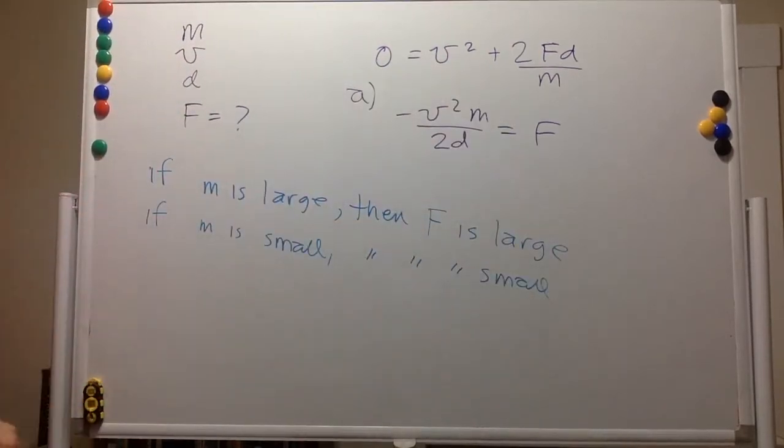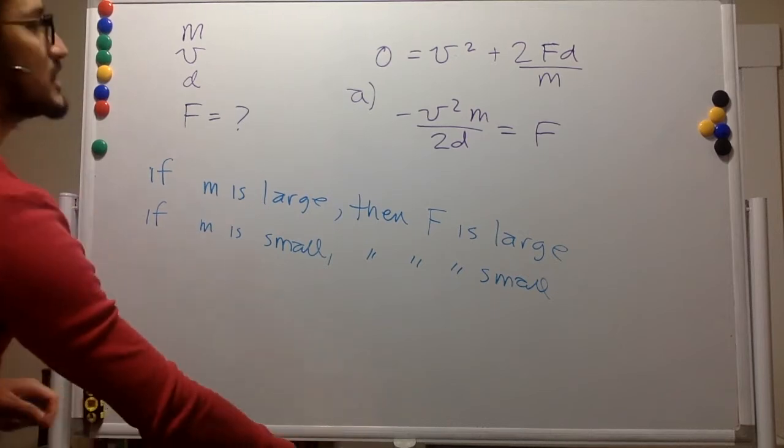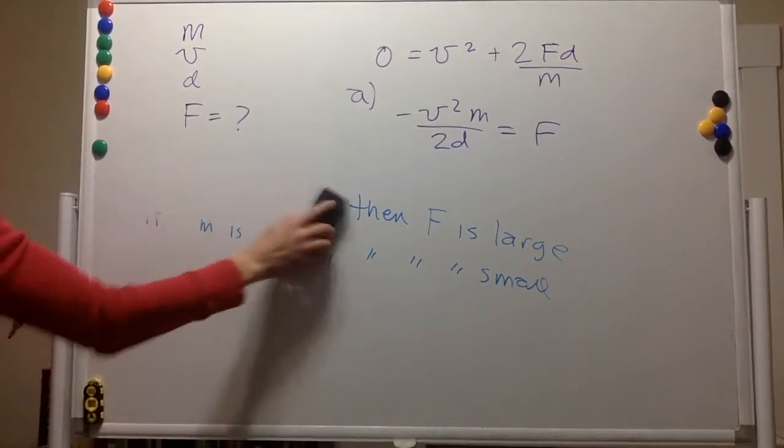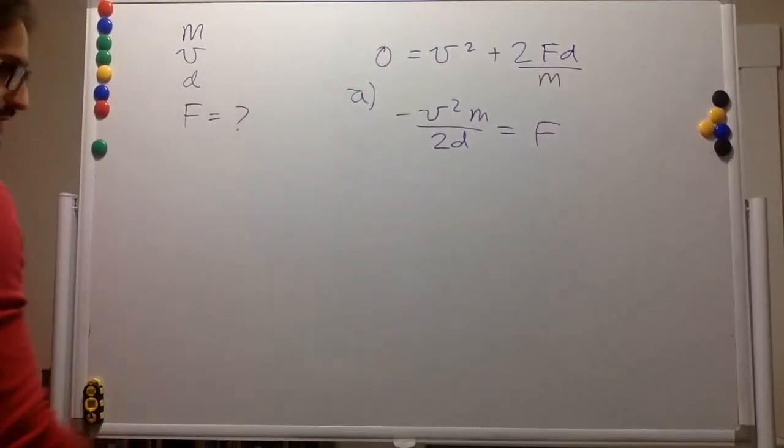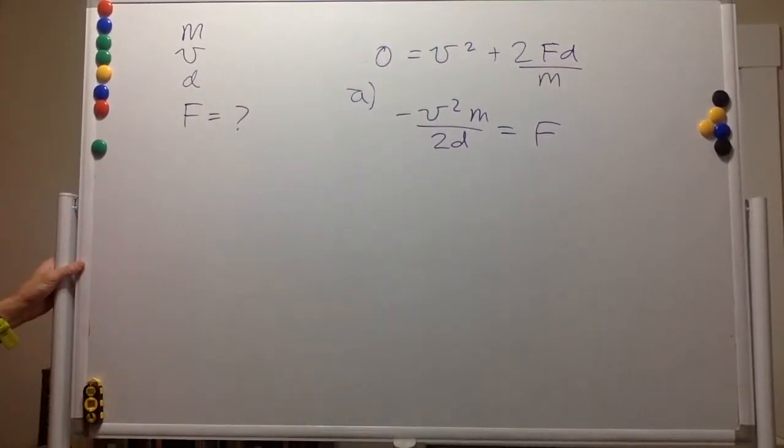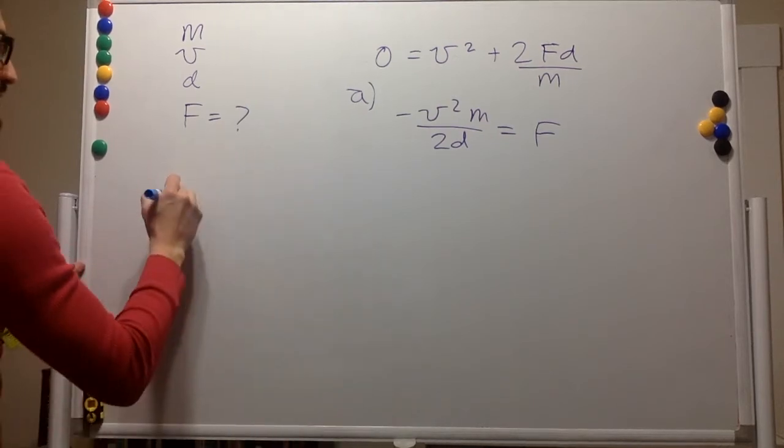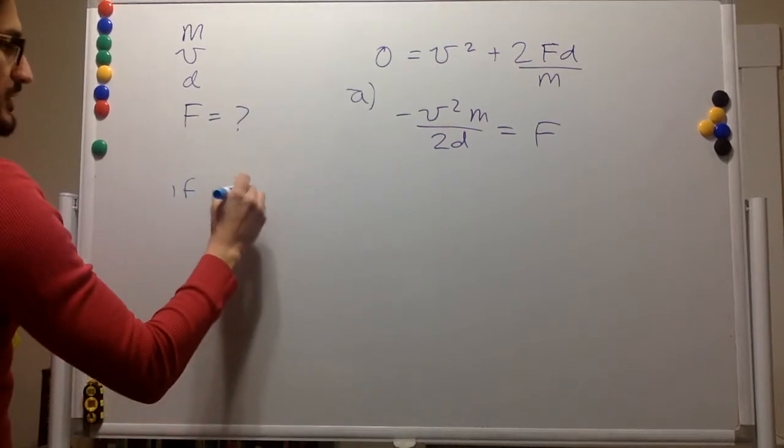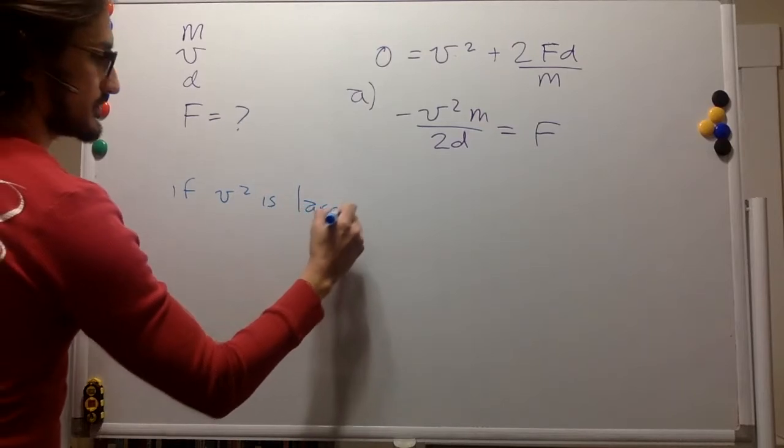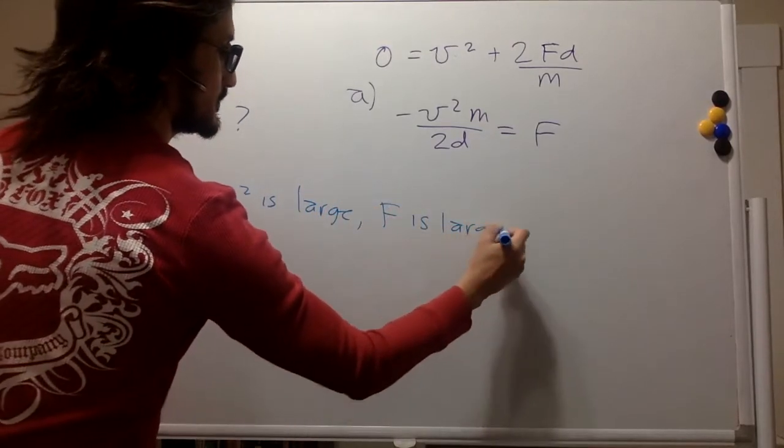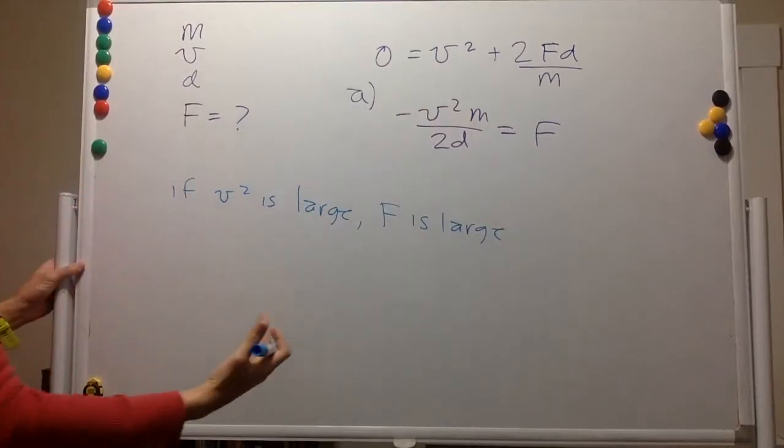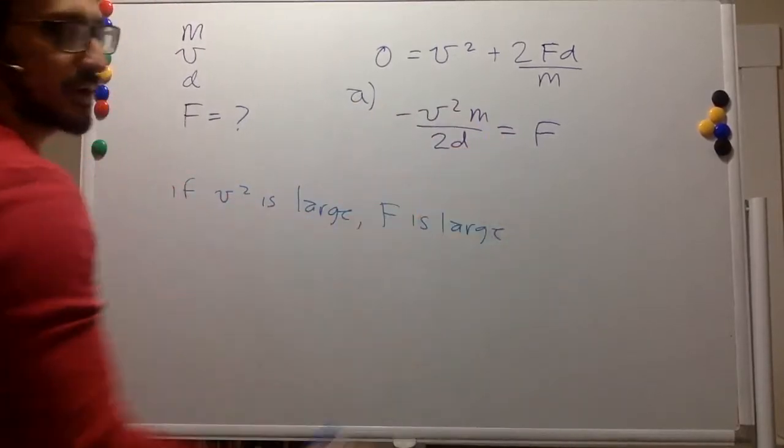And the velocity squared. Let's say that you're throwing the same thing. It's a rock. If you throw it slowly, then the force is going to be pretty tiny. But if you throw it really hard, then the force is going to be really hard.